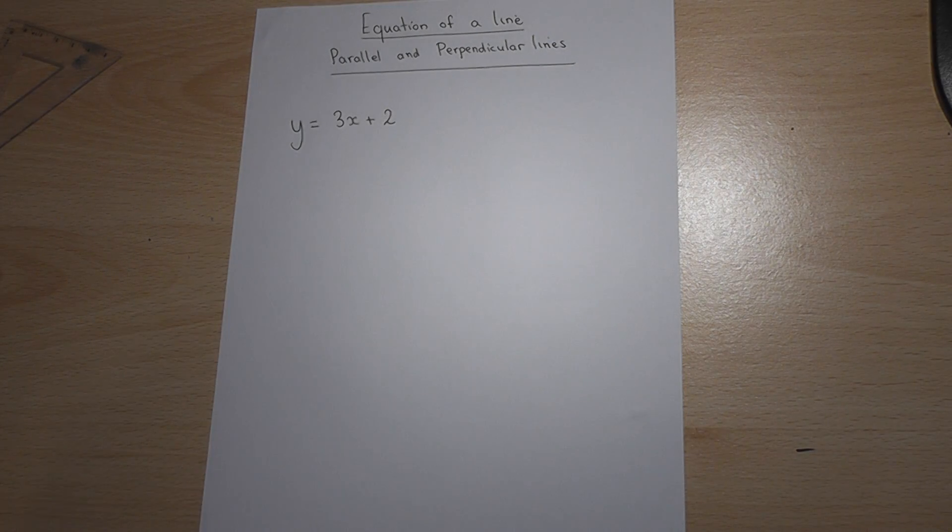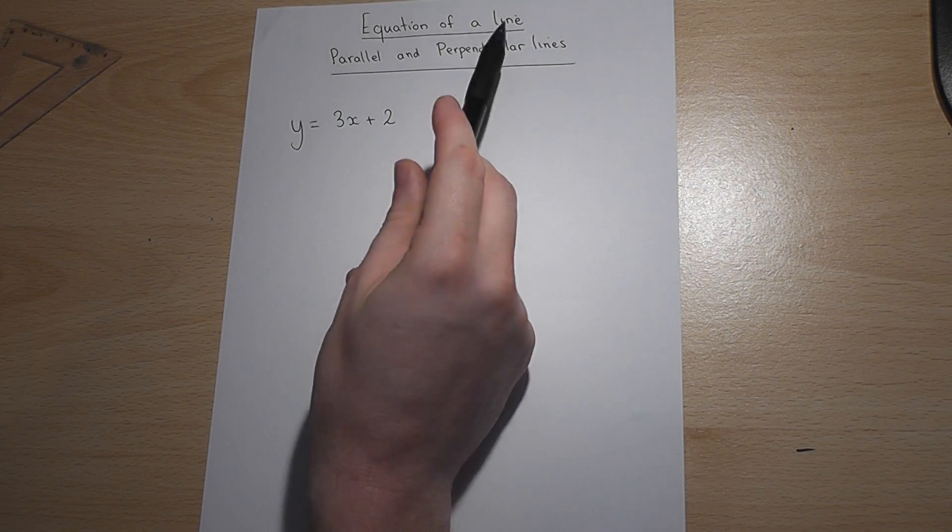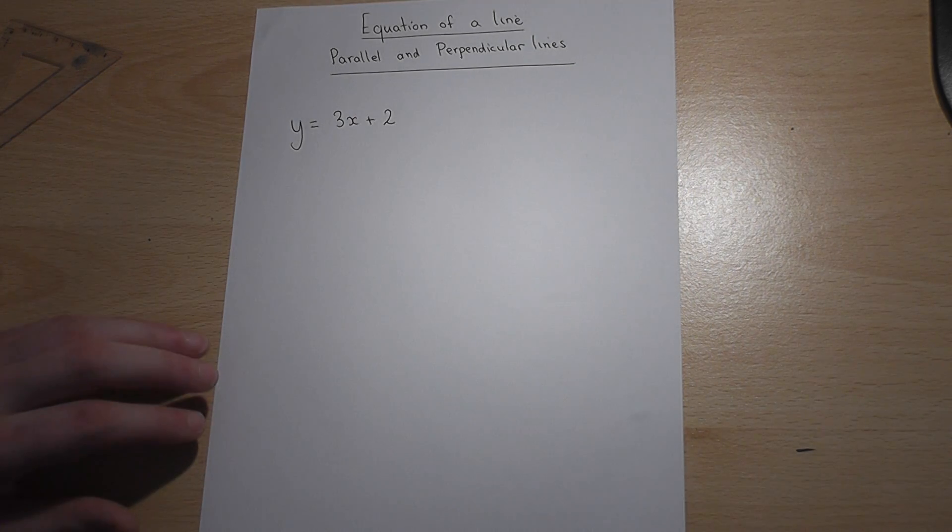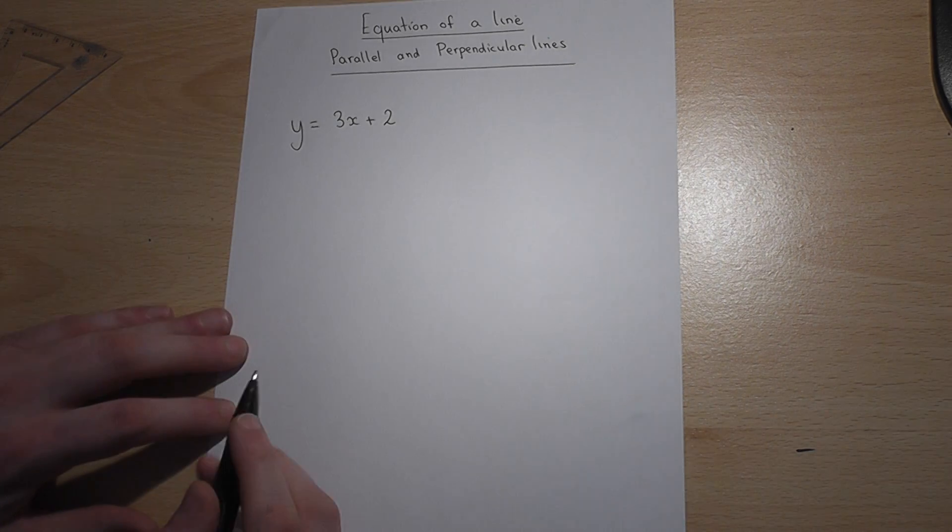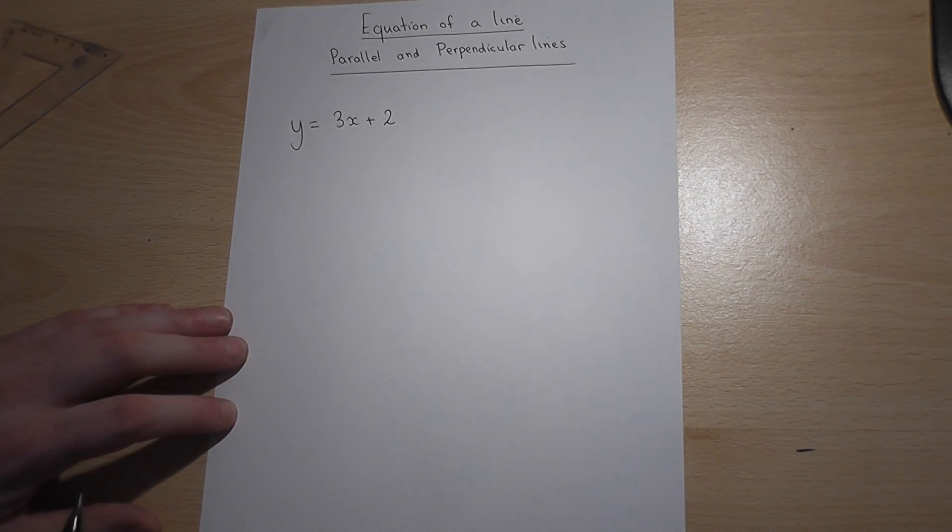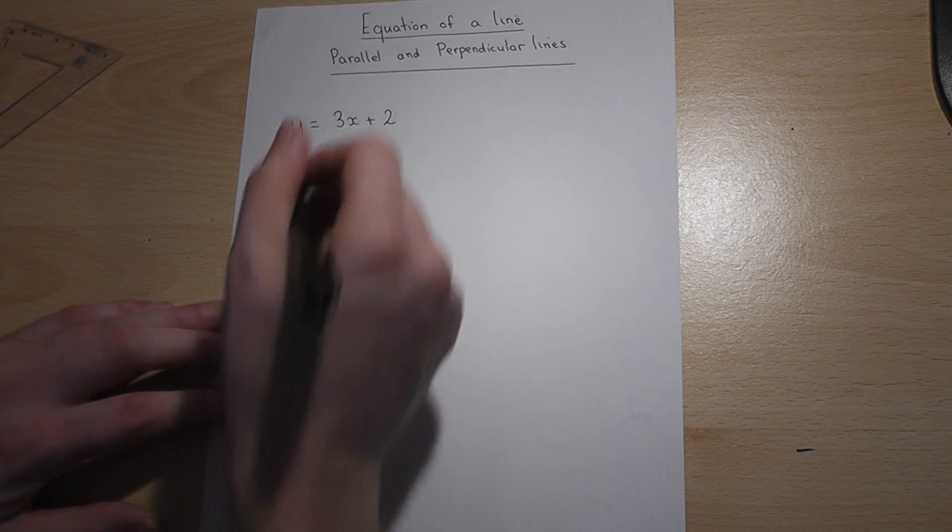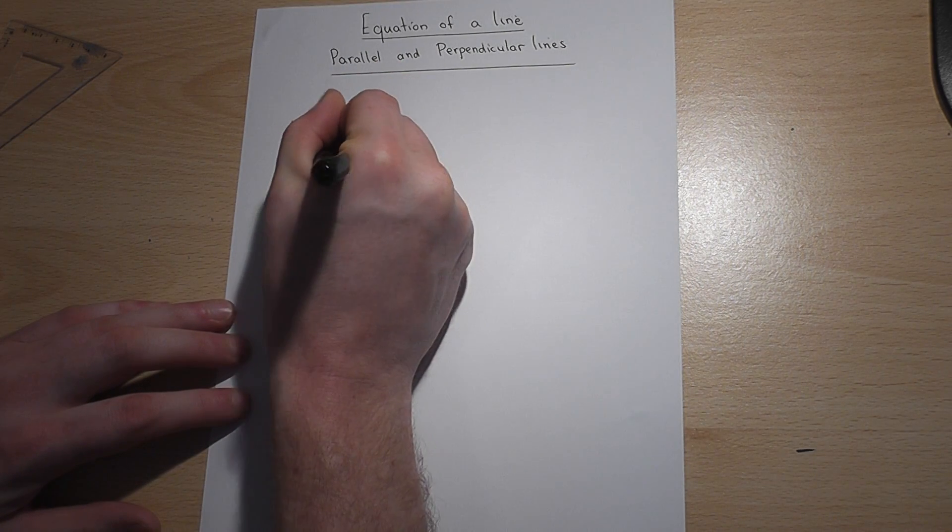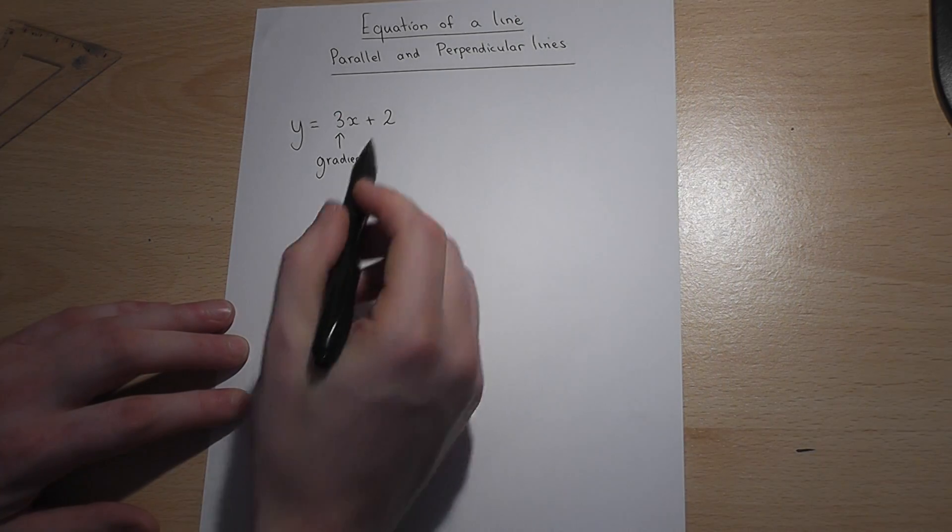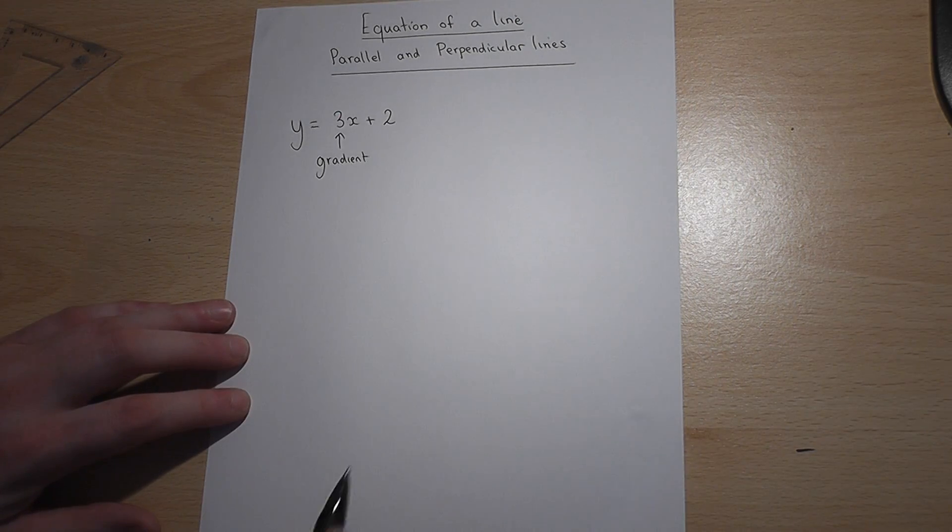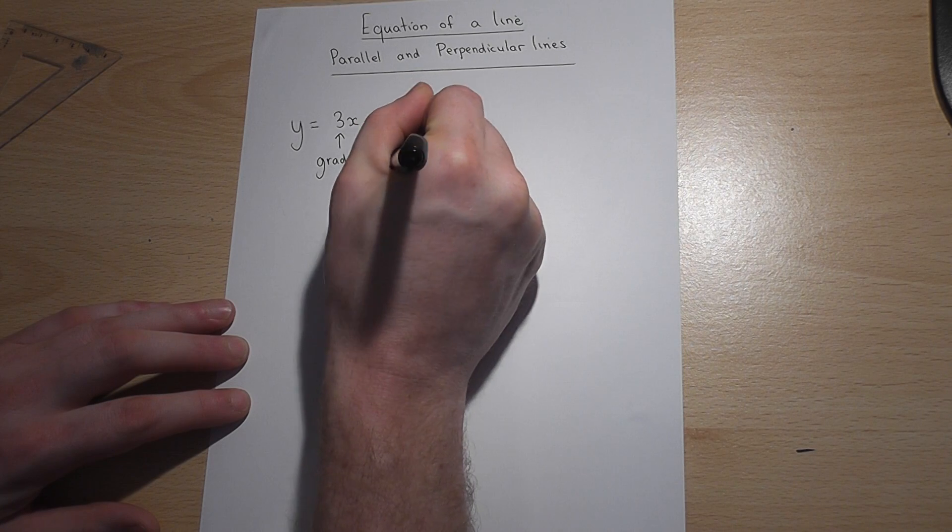This video revises a few key terms in the equation of a line. When you're given an equation like this, the number before the x or the coefficient of x is called the gradient, and the number which we plus or minus is called the y-intercept.